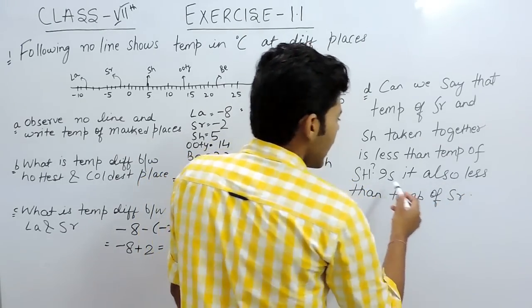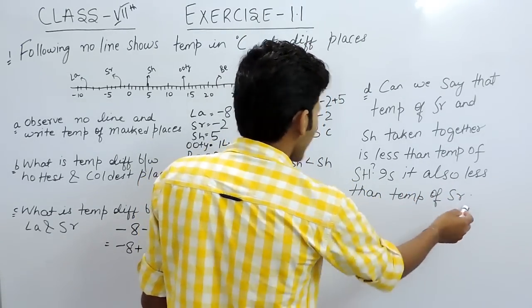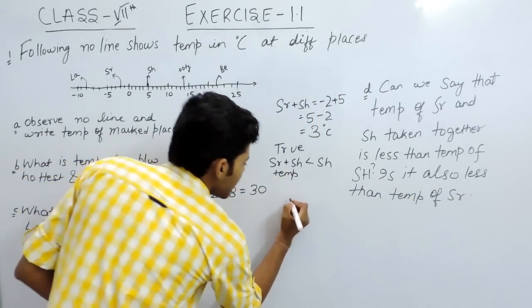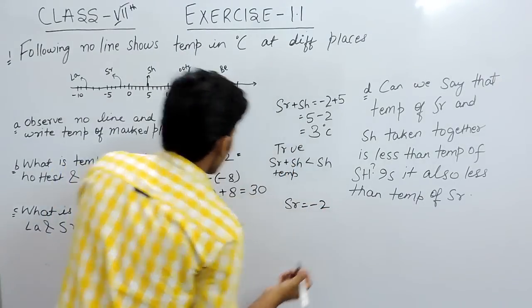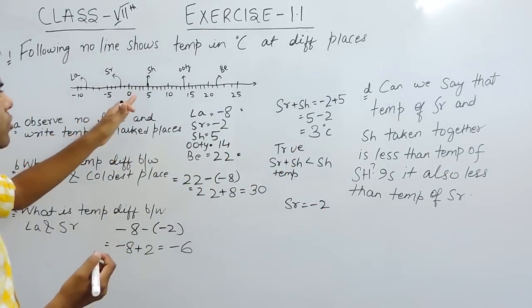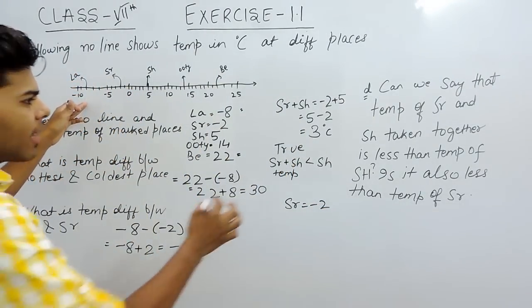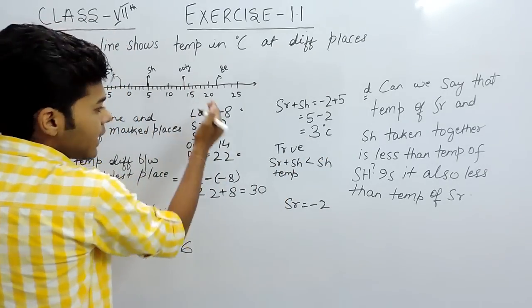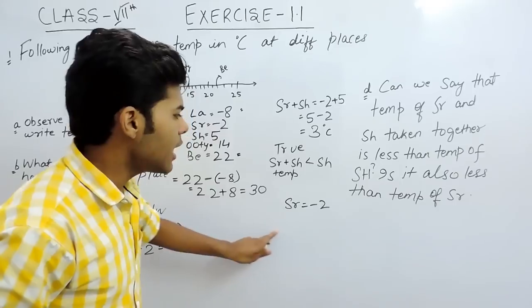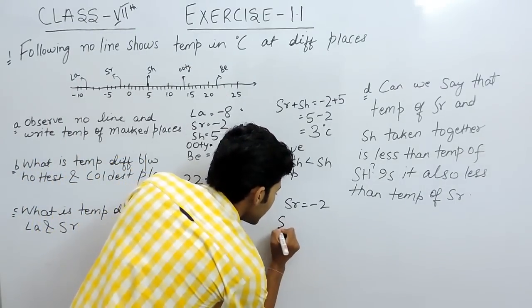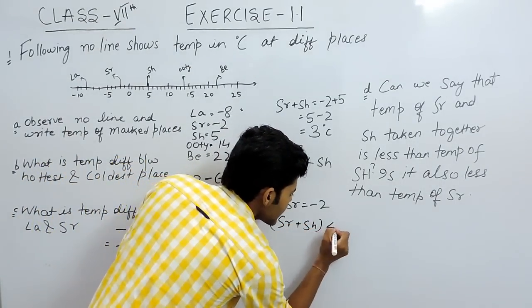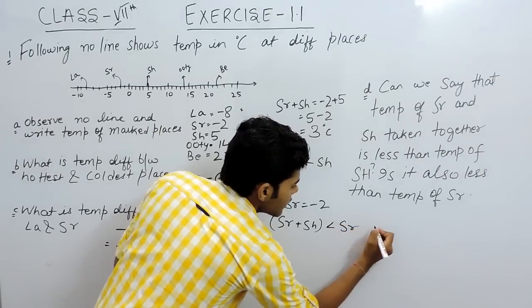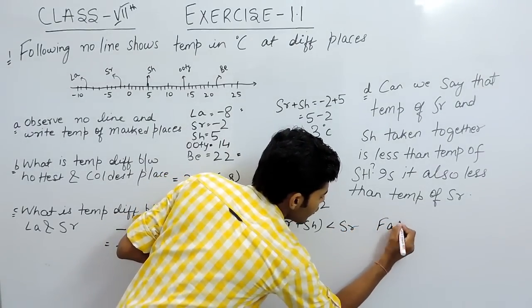And now, for the last one, it is also less than temperature of SR. So, temperature of SR is minus 2. On the number line, minus 2 comes on the left-hand side. Whereas, 3 is on the right-hand side. So, 3 will be greater. So, this statement is false. That temperature of SR plus SH is less than SR. This statement is false.